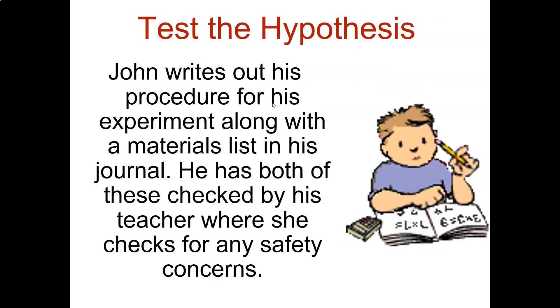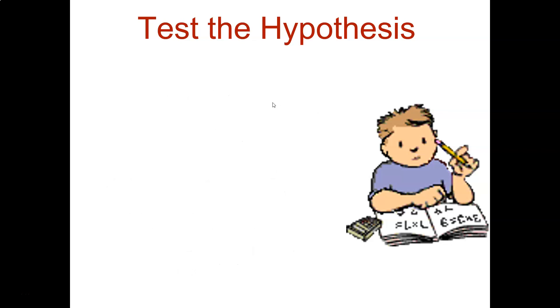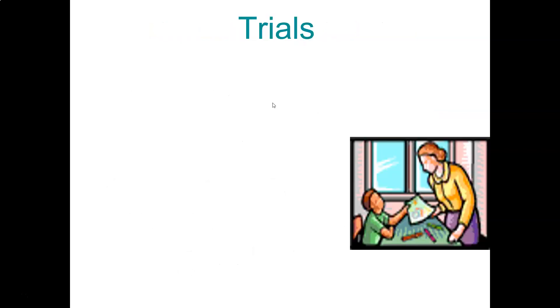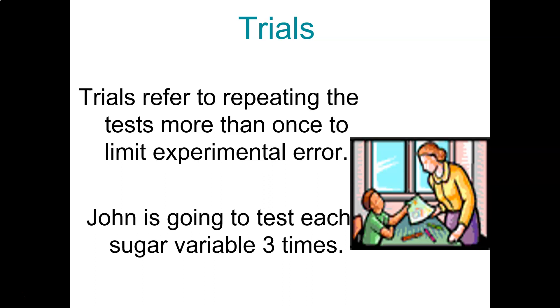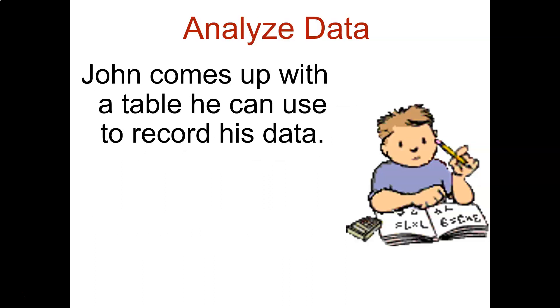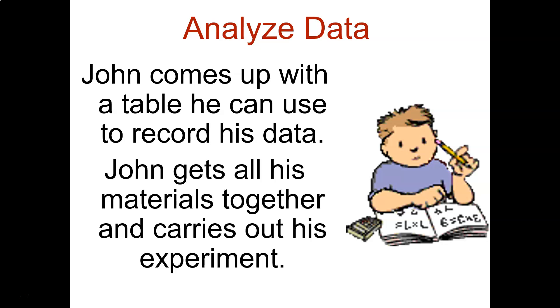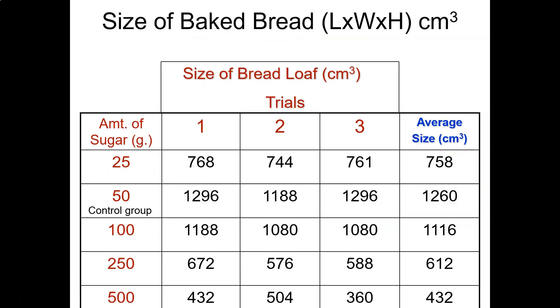So what he's going to do is he's going to do more than one trial for each one to limit experimental error. He's going to do each sugar variable test three times. When we collect our data, we want to put it in some manner that makes it fairly easy to analyze. And that's step five, analyze the data.